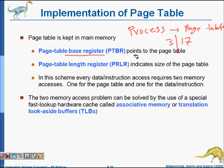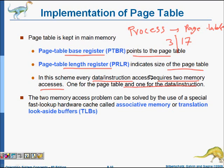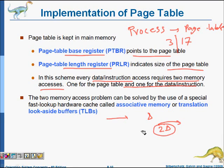In this scheme, every data or instruction access requires two memory accesses: one for the page table lookup and one to access the actual data. This is costly. Without a page table, one access took time delta. With a page table, you first access main memory for the frame number (delta), then access main memory again (delta), so time doubles. To solve this, we maintain a cache.